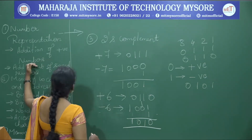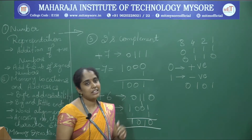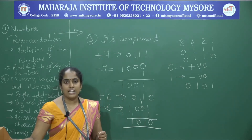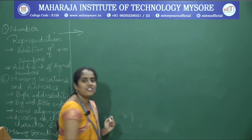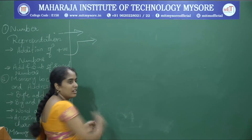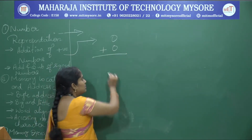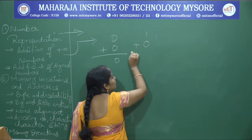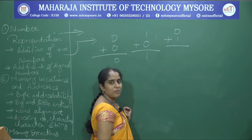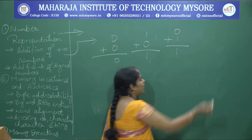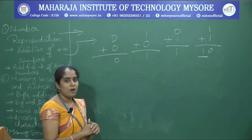Next is addition of positive numbers. Adding positive numbers is straightforward: 0+0=0, 1+0=1, 0+1=1, and 1+1=0 with a carry of 1. This is positive number addition.